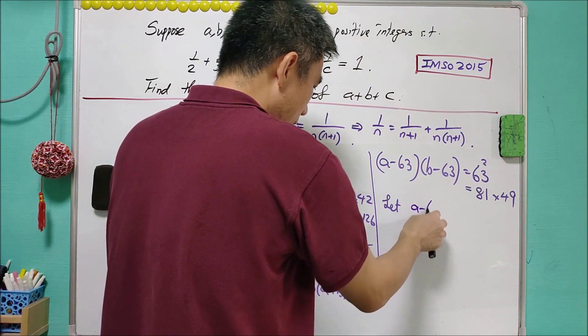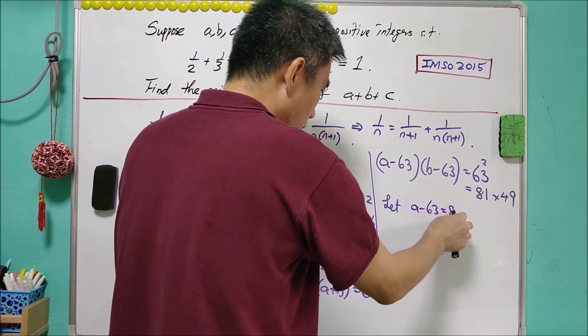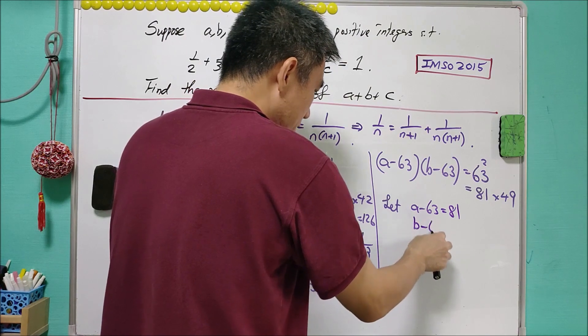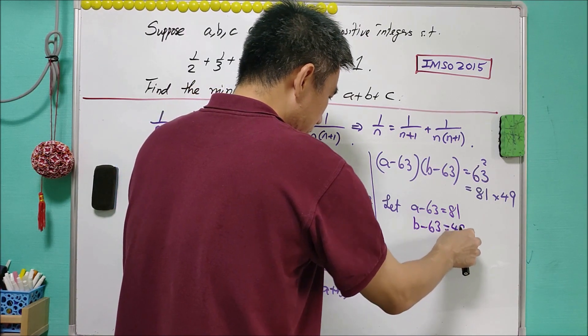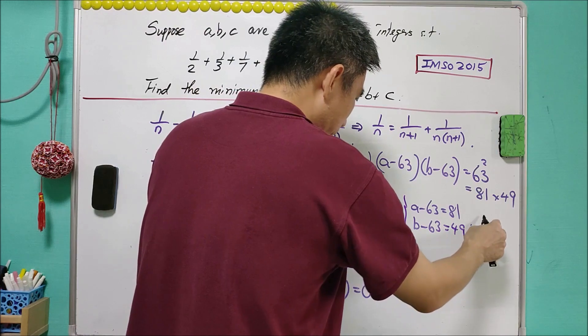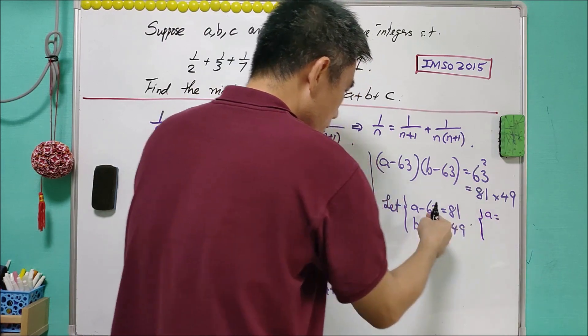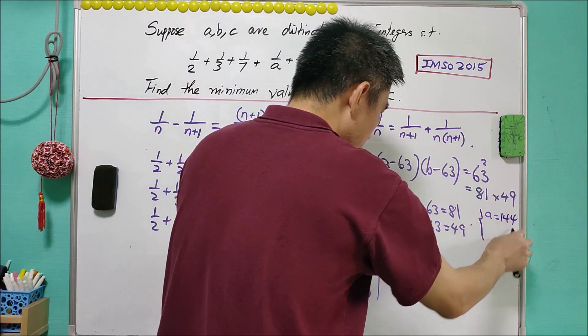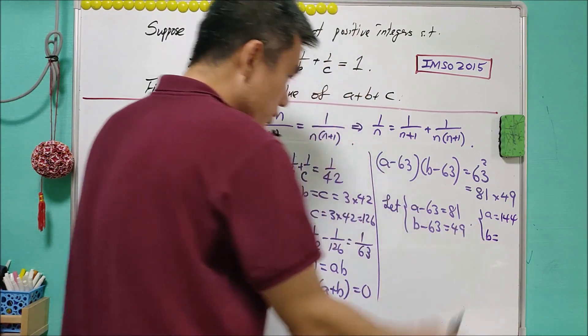So in this case, we let A minus 63 equals to 81. And B minus 63 equals to 49. And this will give me A is equal to 144. And B is equal to 112.